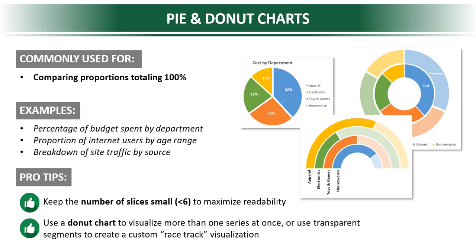There are some pro tips to keep in mind. The first pro tip is to keep the number of slices small — take fewer slices, meaning fewer values. If you take fewer than six slices, you can maximize readability and understand the chart very easily.